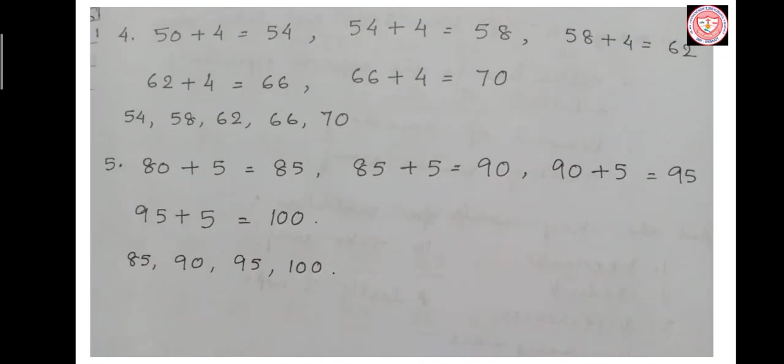To count by fives, you add five to get the next number. For example, 80 plus 5 equals 85, 85 plus 5 equals 90, 90 plus 5 equals 95, 95 plus 5 equals 100.